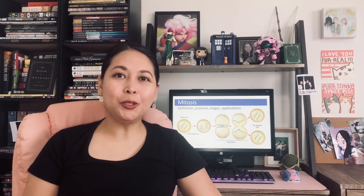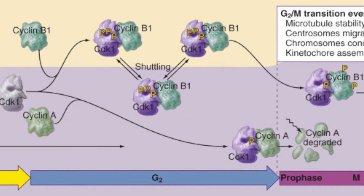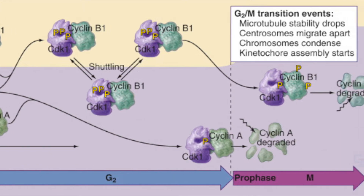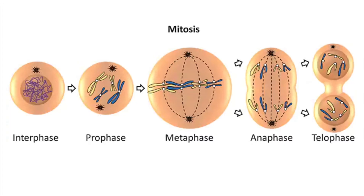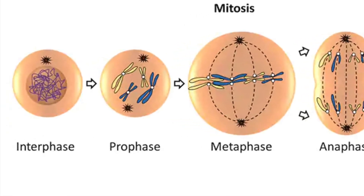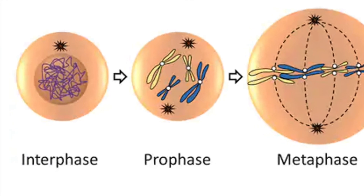Mitosis is also controlled by its own set of cyclins and cyclin-dependent kinases. Cyclin A-CDK1 and cyclin B-CDK1 complexes promote the events of mitosis. As a point of clarification: interphase is technically not part of mitosis itself — it is a term referring to G1, S, and G2 phases combined, which are preparatory phases needed for the mitotic phase to occur.